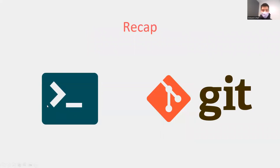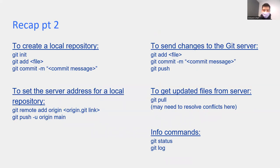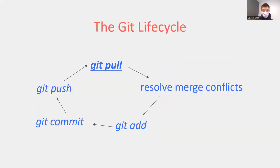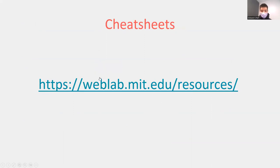As a recap: today we talked about the command line/terminal and using Git — both are very essential. The key Git commands are: git init to start a new repository; git add [filename] to start tracking a file; git commit -m '[message]' to create a commit; git push to send changes to the remote Git server; git pull to get updates and resolve merge conflicts; git status and git log as helpful info commands. Remember the workflow: pull, resolve merge conflicts, add your changes, commit, push, pull again. We also have helpful cheat sheets at weblab.mit.edu/resources.